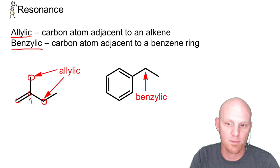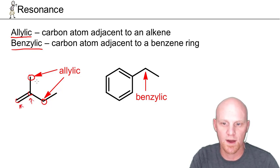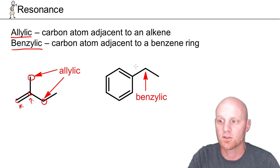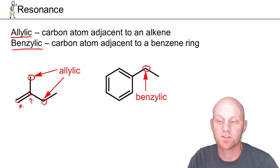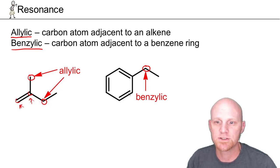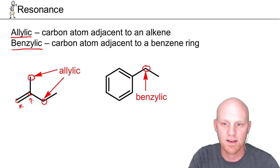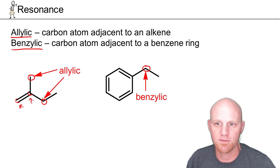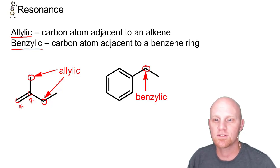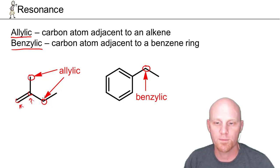It has to be exactly the carbon directly attached to the carbons of the alkene — not the alkene carbons themselves, which are called vinylic, but one carbon further away. Those are the allylic ones. Likewise, benzylic carbons are the carbons attached to a benzene ring — not any of the carbons of the ring itself, but those directly attached to it. In both cases, allylic or benzylic carbons are one bond away from pi electrons, and resonance comes down to being one bond away from pi electrons.